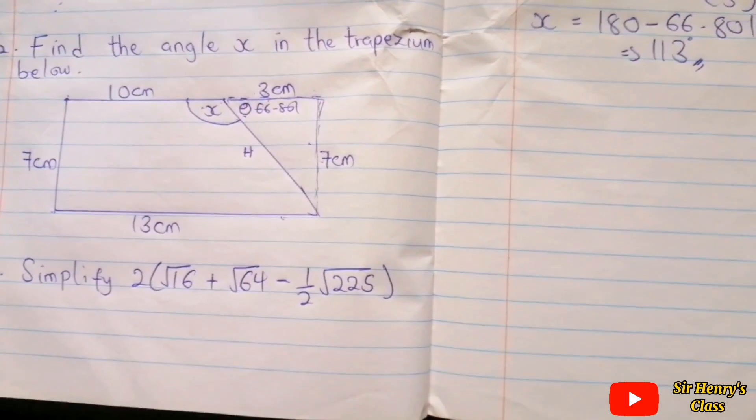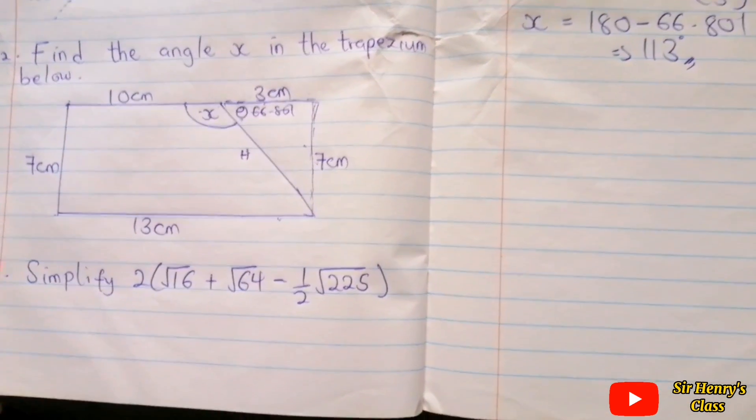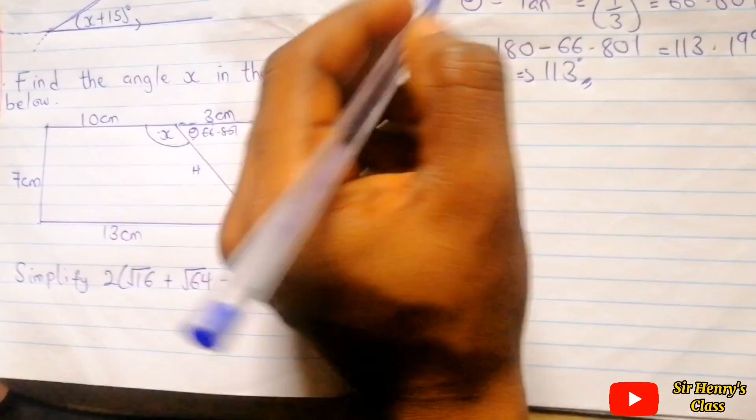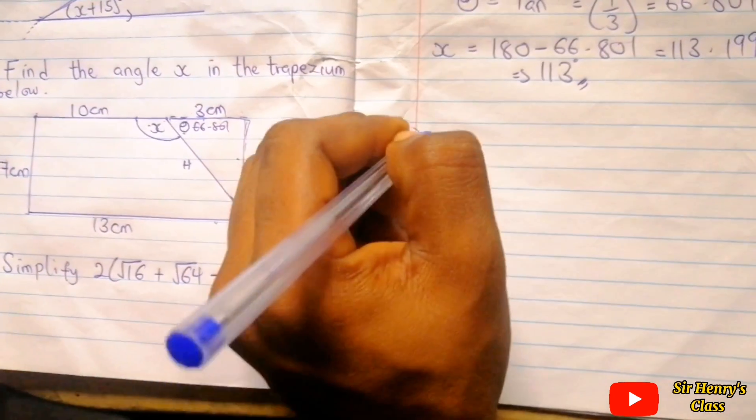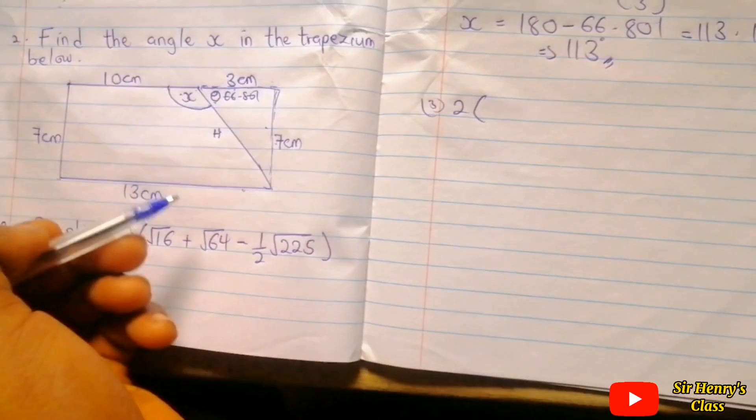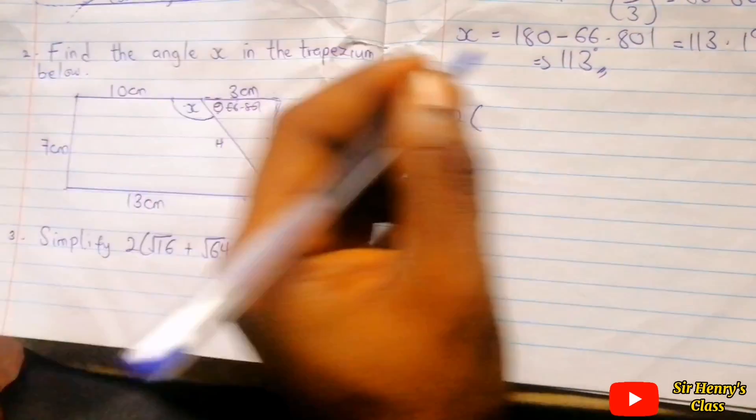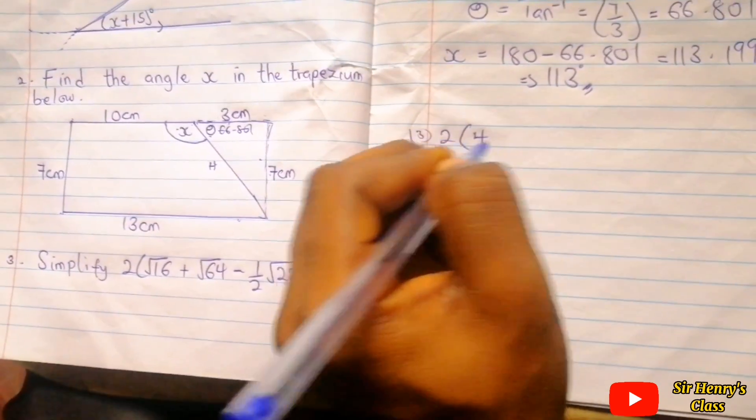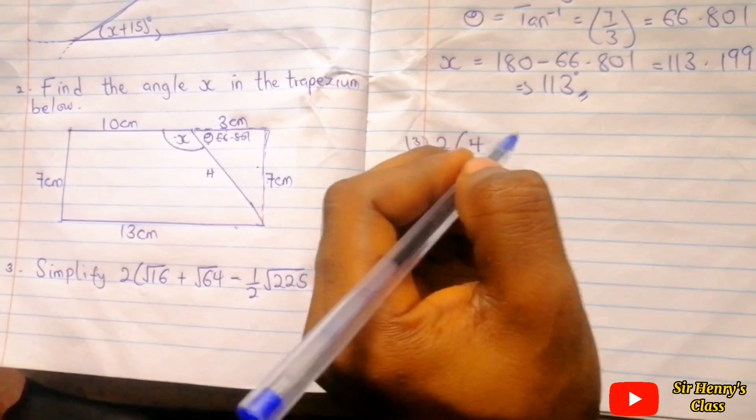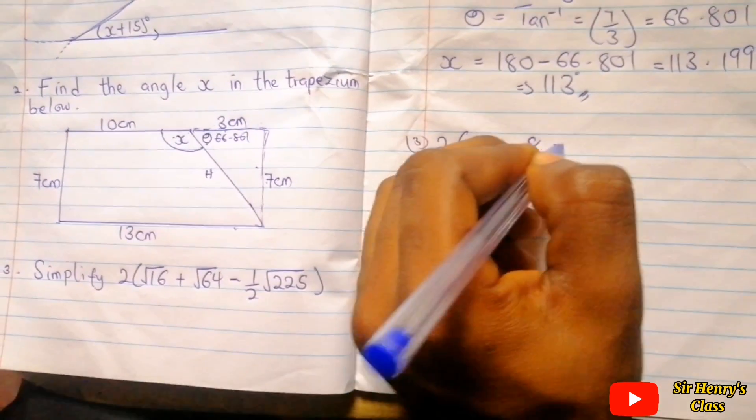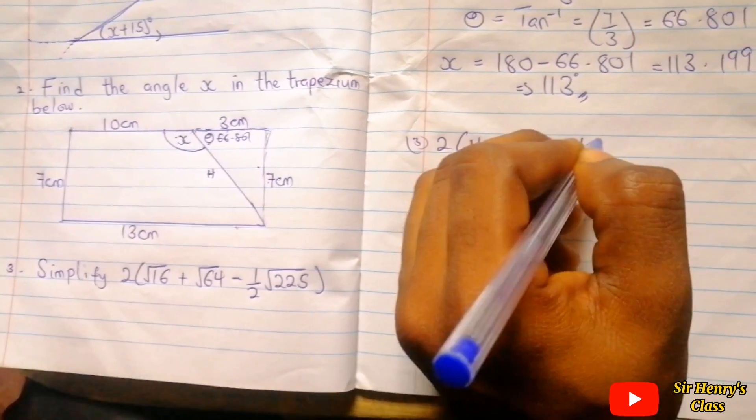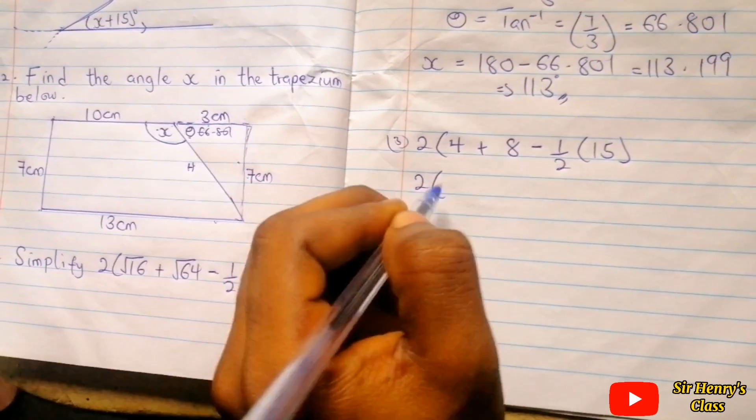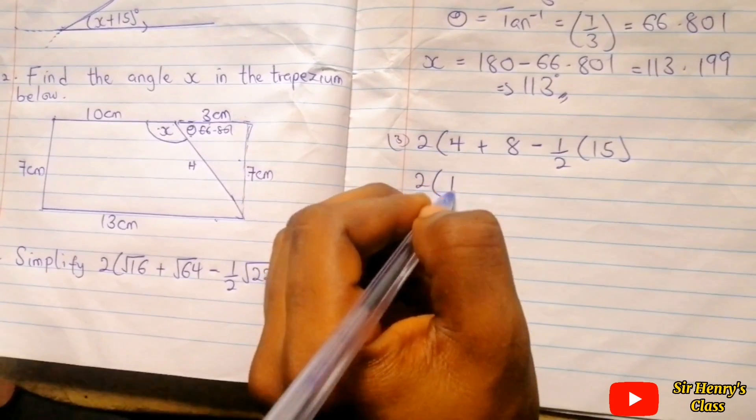The last but not the least: 2 root 16 plus root 64 minus half of 2 root 225. So we'll say 2 bracket, root of 16 is 4, plus root of 64 is 8, minus half of root of 225 is 15. So we have 2 bracket, 4 plus 8 is 12.